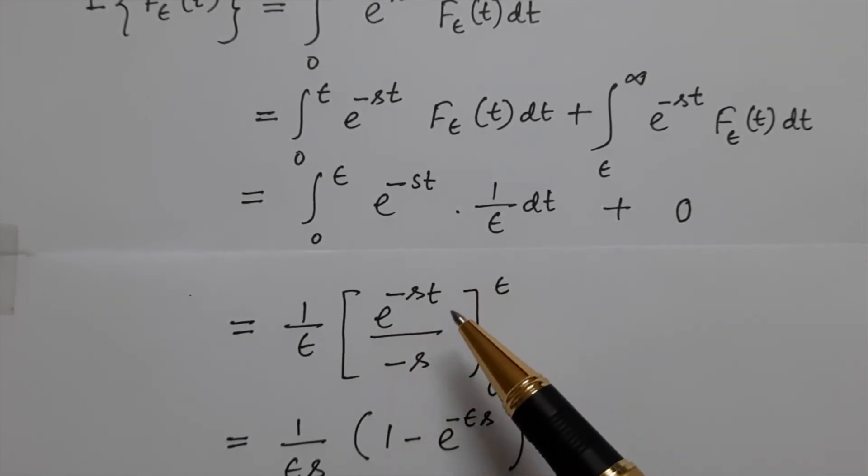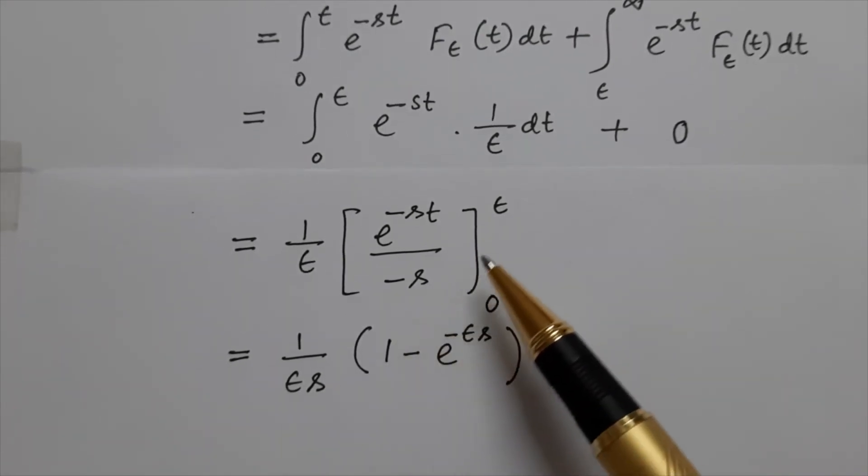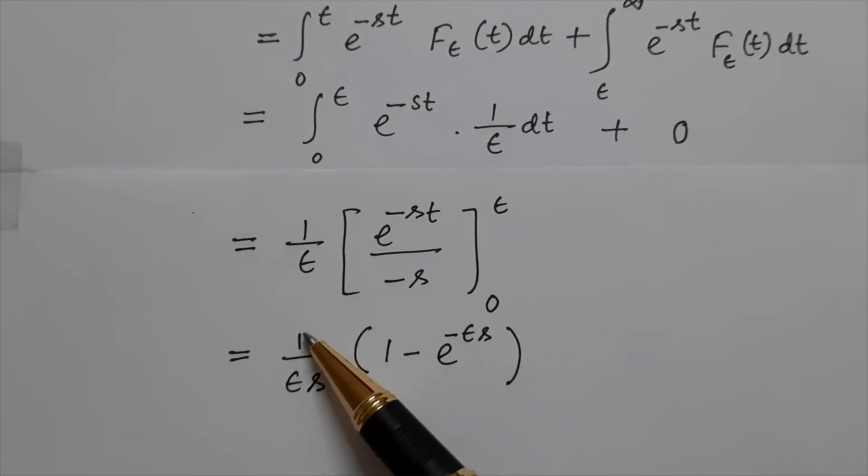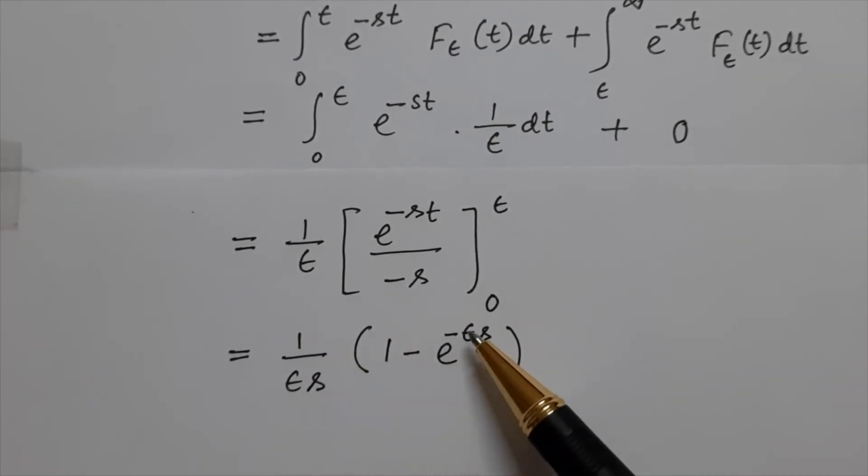Now let us put the limits. After putting the limits, we get (1/εs)(1 - e^(-εs)). So this is the required Laplace transform of the Dirac delta function.